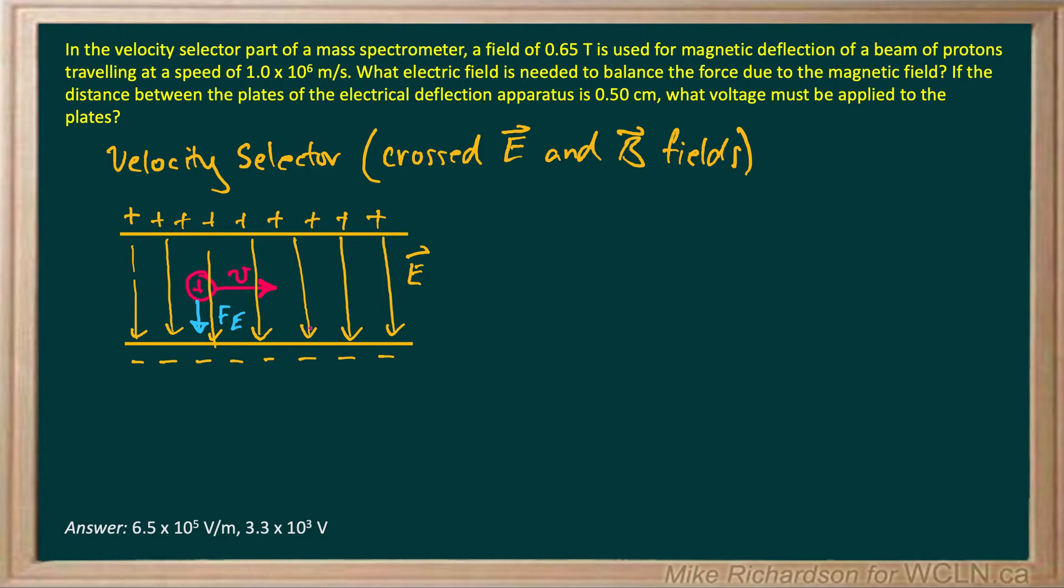Now we want this proton to continue in a straight line. That's the point of a velocity selector. It's like there's a little hole right here, where only those protons that have just the right speed will actually travel through that hole. So the idea is to keep it straight. So we need to counter that electric force with a magnetic force that's equal and opposite up.